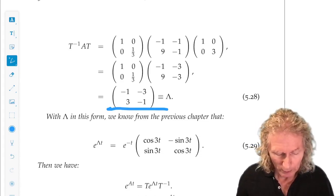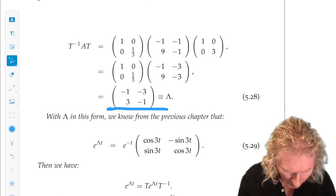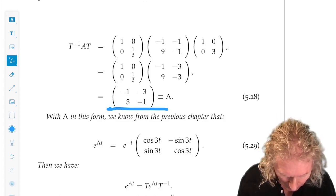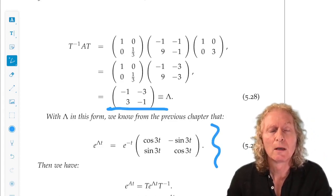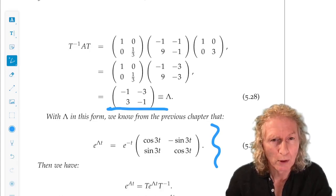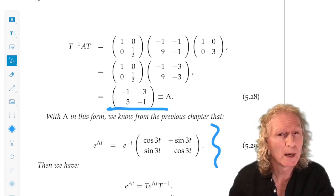And so, if we compute e to the lambda T, we get this form. E to the real part, which is minus 1, e to the minus T, multiplying this 2 by 2 matrix.